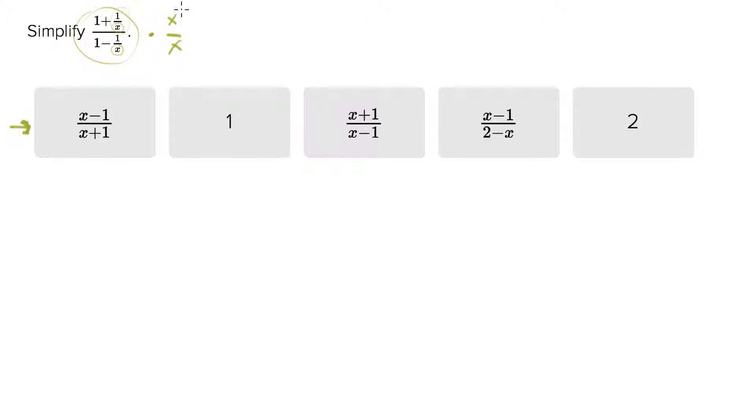Right? So how did I come up with this particular fraction to multiply x over x? Well, I just looked at what was in the denominator, and I put that in both of these, and I put that in the numerator and the denominator.